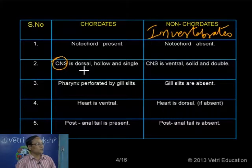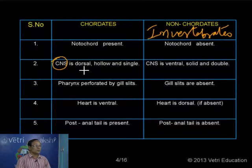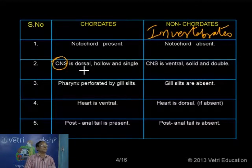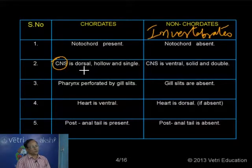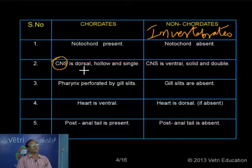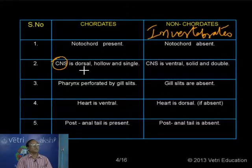In non-chordates the nerve cord is solid and double. In chordates the pharynx is perforated with openings called gill slits for movement of water into the respiratory chamber; gill slits are absent in non-chordates. The heart is ventral in position in chordates, but in invertebrates or non-chordates it is dorsal if present - because in most cases there is no specific heart, for example in cockroach or earthworm. Post-anal tail is present in chordates but absent in non-chordates.